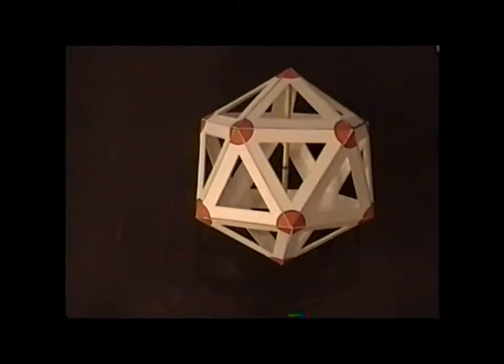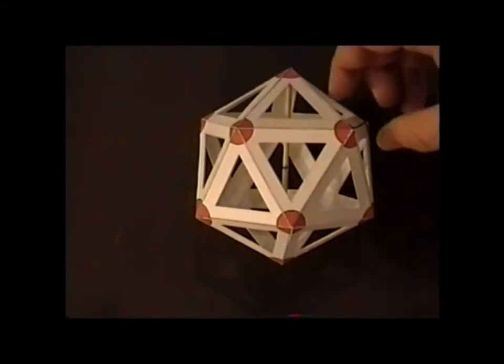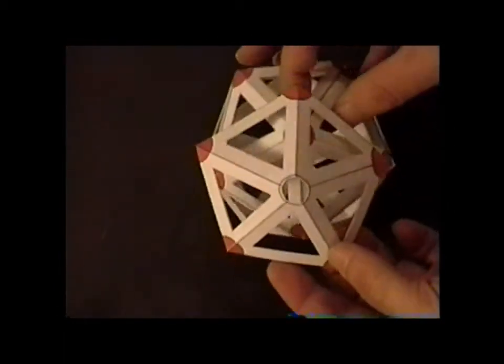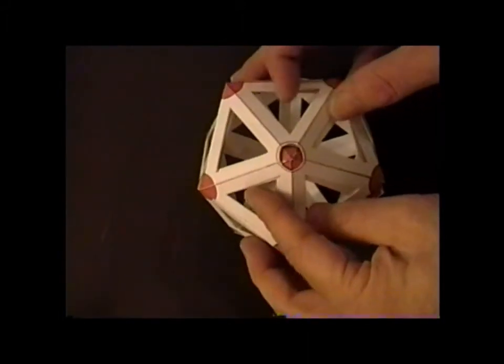One of the most important symmetry operations of the icosahedron is the C5 rotation. And with this particular model, we can demonstrate that operation. So for example, we can set it up in this sort of way. And we have a cap which you can put on top like this.